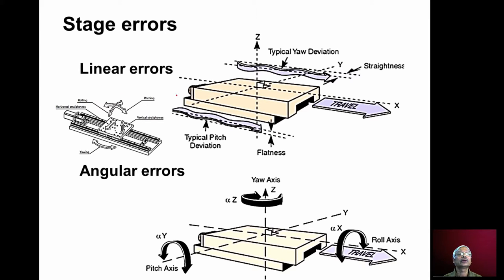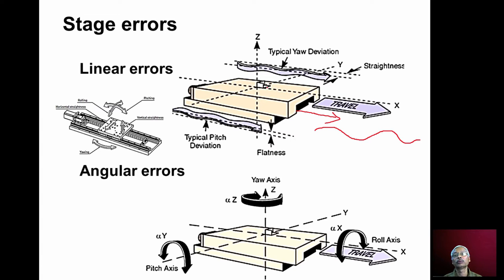We have linear errors and angular errors. This picture shows the table surface and the table is moving in the x direction. When it moves, it may move up and down — the table surface will move up and down — that is known as the flatness error.